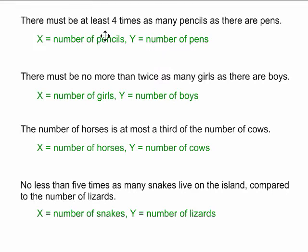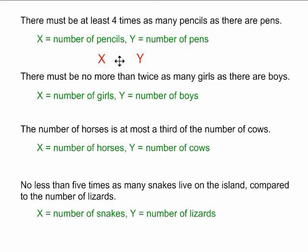Let's look at the first example: there must be at least four times as many pencils as there are pens. In this case, I've defined x as the number of pencils and y as the number of pens. I place my x and my y and I have to put the inequality symbol in between them. Will it be a less than or equal to sign or a greater than or equal to sign? In this case we see the words 'at least,' which indicates a greater than or equal to symbol. Right now my equation is saying the number of pencils is greater than or equal to the number of pens.